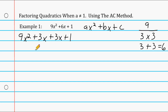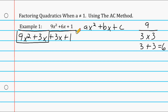Now with these four terms, we break this into two separate parts. We take 9x squared plus 3x as one part and plus 3x plus 1 as a second part. After separating into two pieces, we factor something out of the first part and then factor something out of the second part.